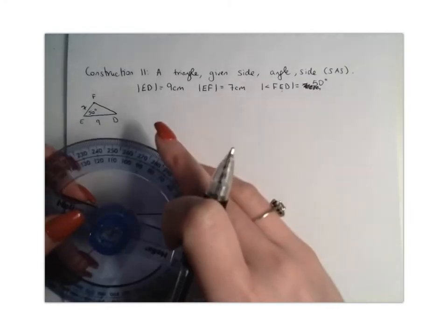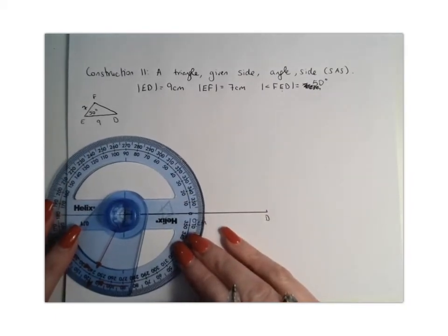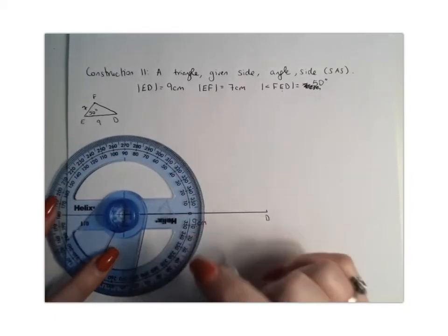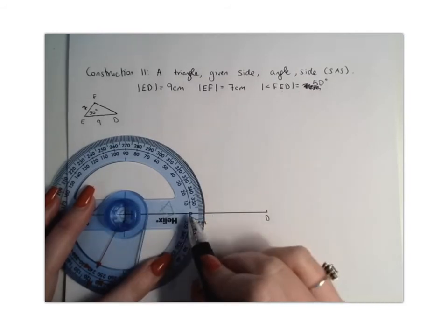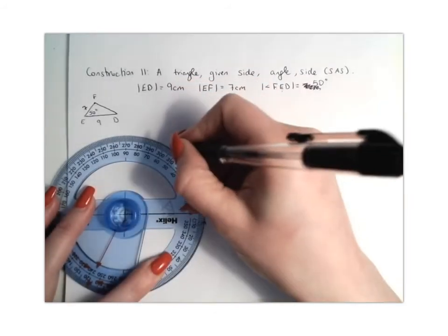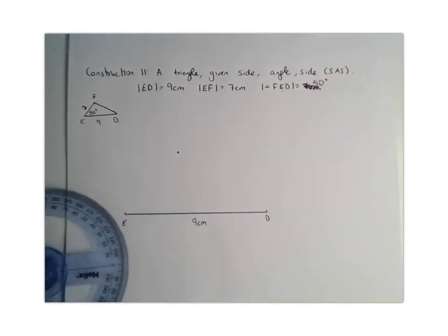I'm going to put the crosshairs of my protractor at point E, line up my straight line, start at 0 and measure around to 50 degrees. Just take your time making sure everything is lined up, up to 50, and I'm going to put down my dot there.